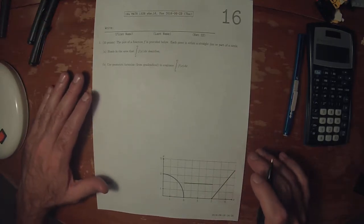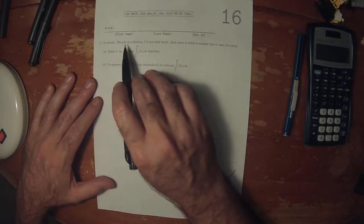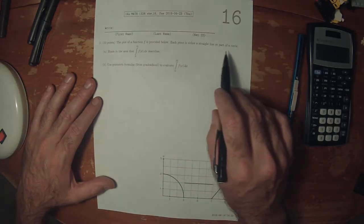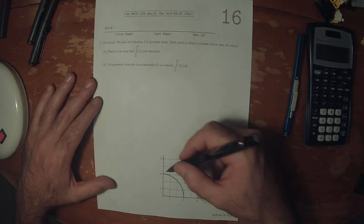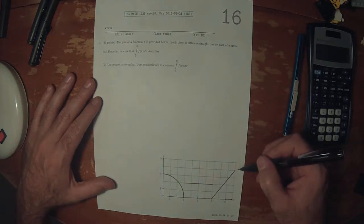This is the solution to written homework 16. The plot of a function f is provided below. Observe that a plot of f is non-negative everywhere.